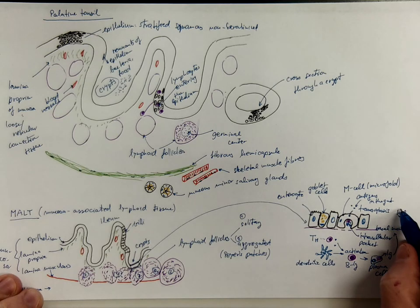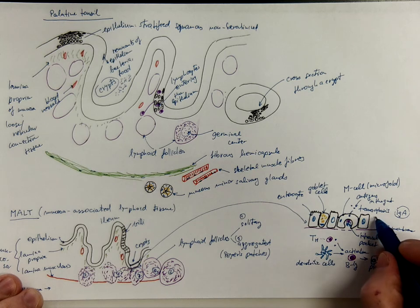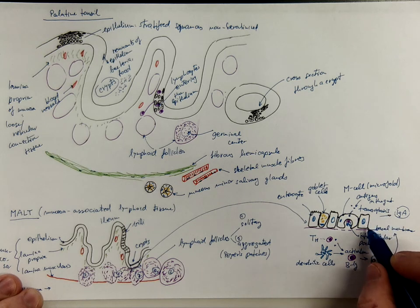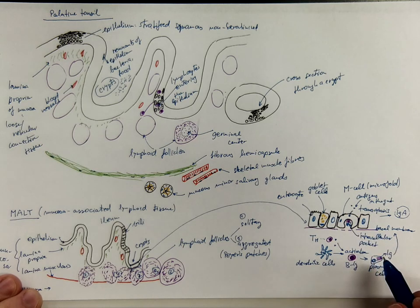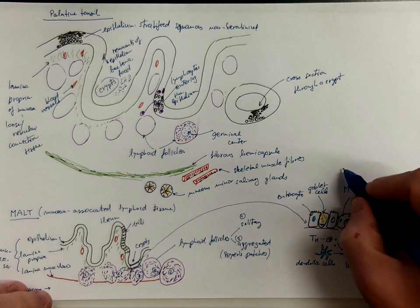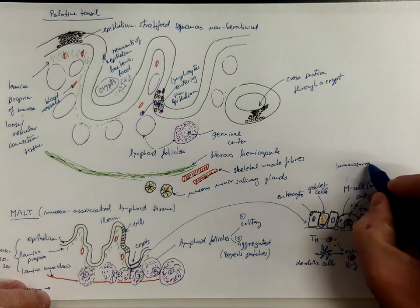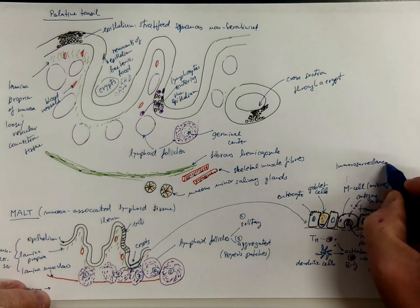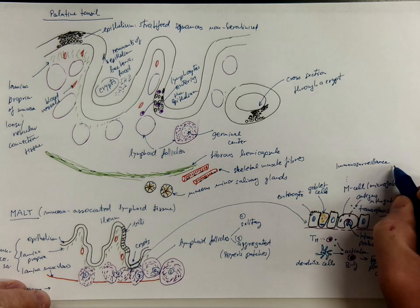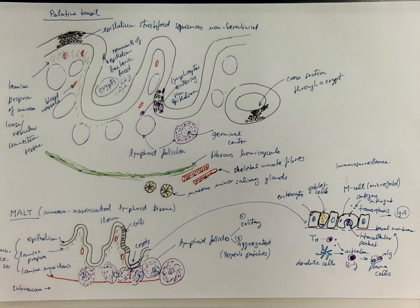It's mainly type A immunoglobulins, which are stable also on the mucosa. They are stabilized by a secretion component, a glycoprotein produced also by the enterocytes. So the M cells are providing some kind of immunosurveillance. It helps the immune cells to monitor which antigens are present on the mucosa.